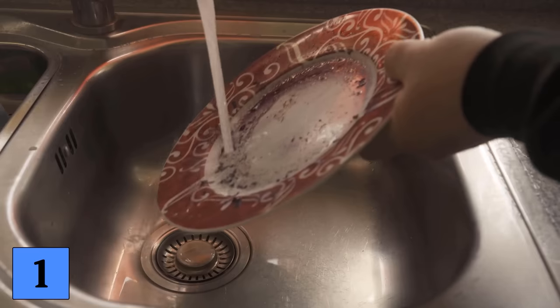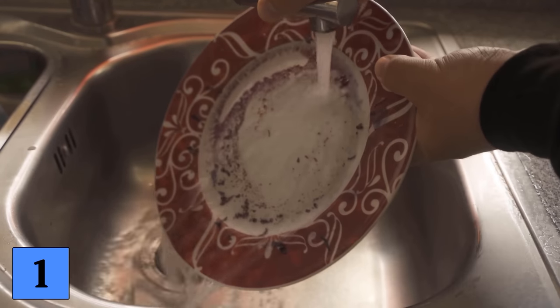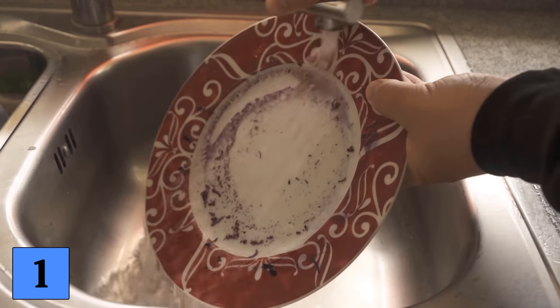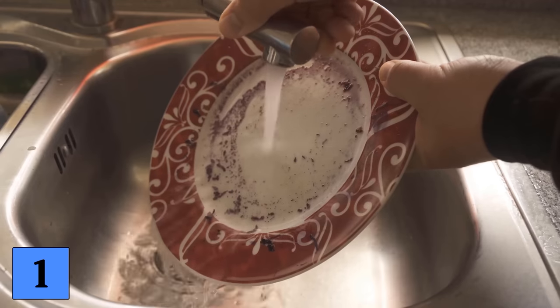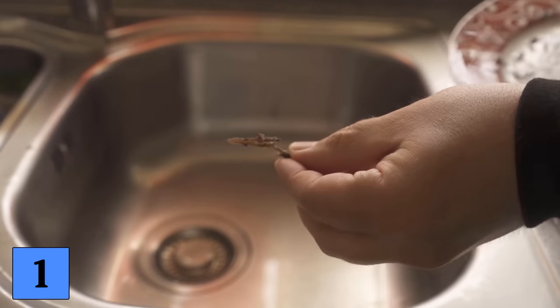Let's get straight to mistake number 1, that's pre-rinsing the dishes. You really don't need to do this and it only costs unnecessary energy because the dishwasher itself ensures that the dishes are washed perfectly, so you don't need to pre-rinse.